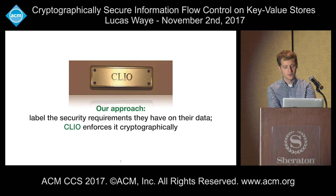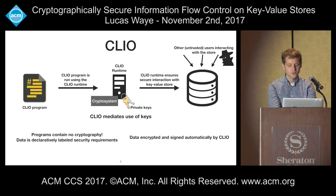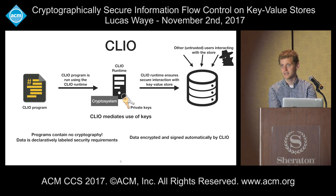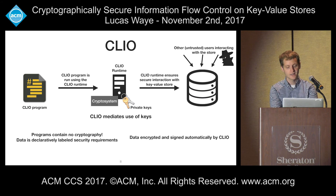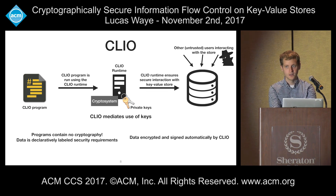A Clio program is written with only security requirements on the data. It's then given to the Clio runtime, and the runtime will invoke the cryptographic primitives. The runtime is trusted to use a secure underlying crypto library and is also trusted to have access to the private keys of the user it's protecting, and will make sure it uses those private keys securely. During execution, Clio programs interact with an untrusted key-value store securely by encrypting, signing, and verifying the data, maintaining security despite other possibly untrusted users interacting with the store.